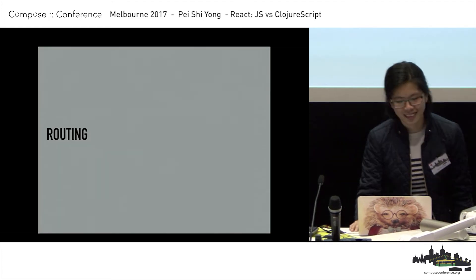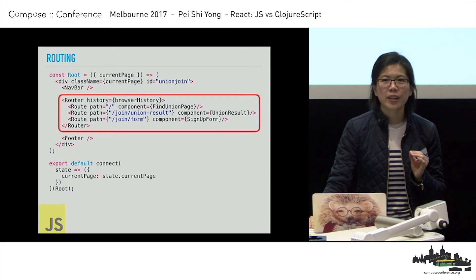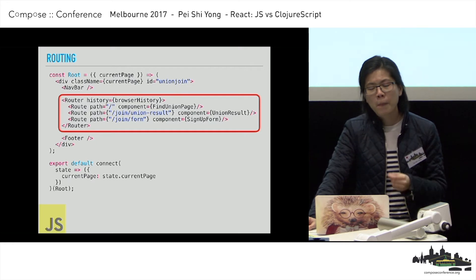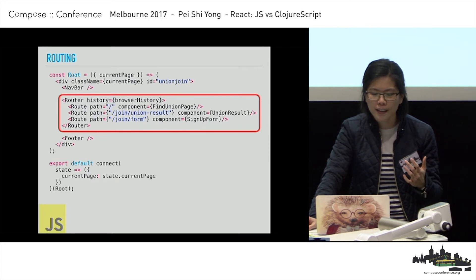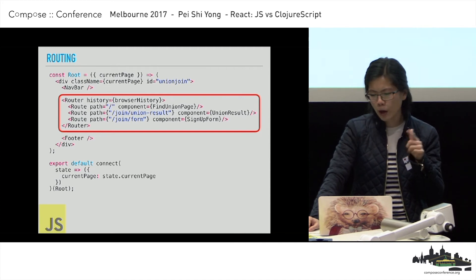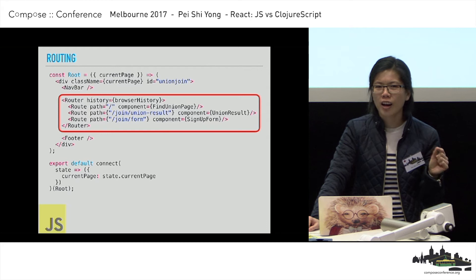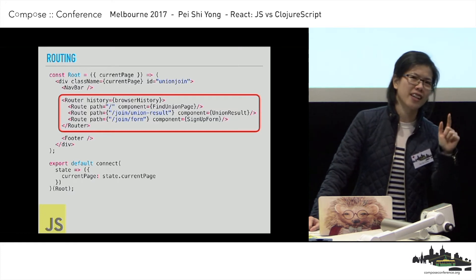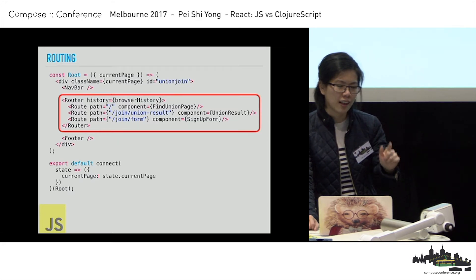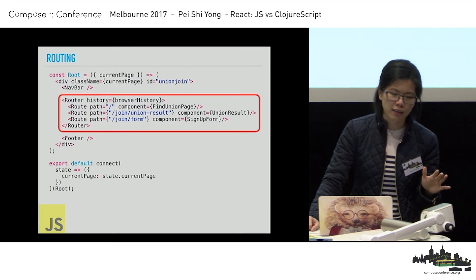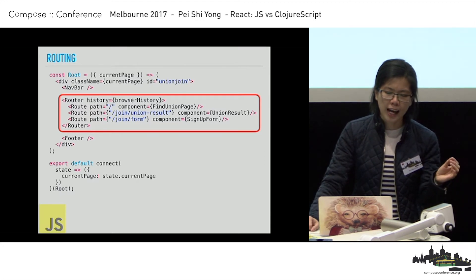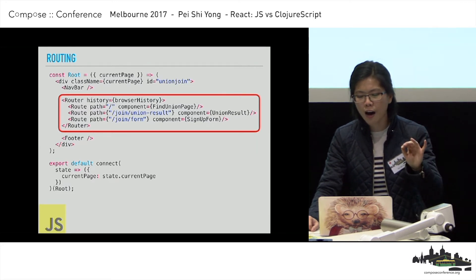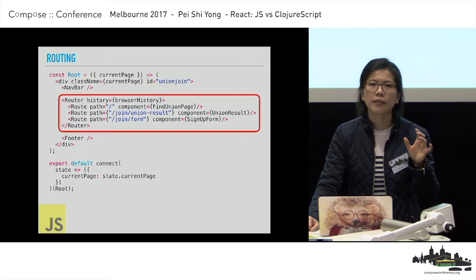The next thing is routing. In React, the default routing library people use is React Router — that's what we chose as well. But the first time I came across this code, I was like: why do people want to put routing in their view file? Then I realized: this is JSX, JSX equals functions, and so this is actually just a case statement — they are switching based on the path to decide what component to render in the middle of the page.